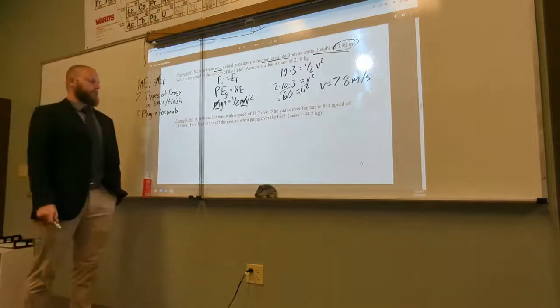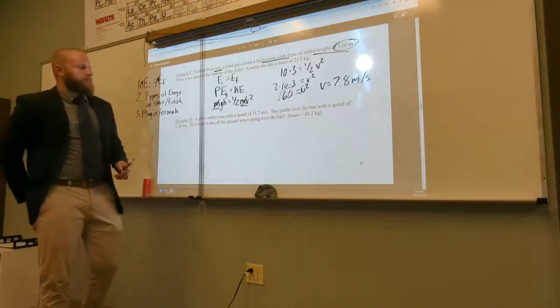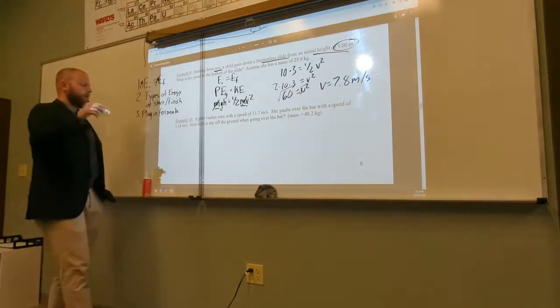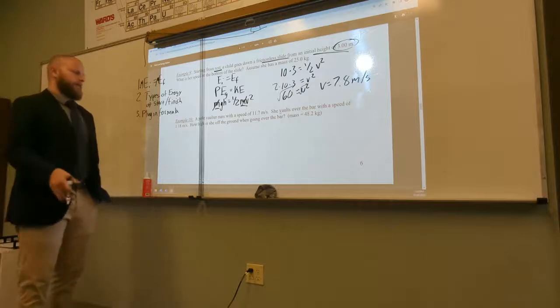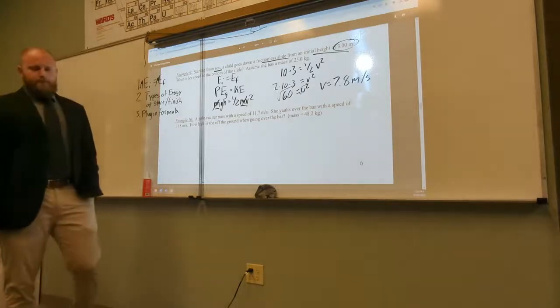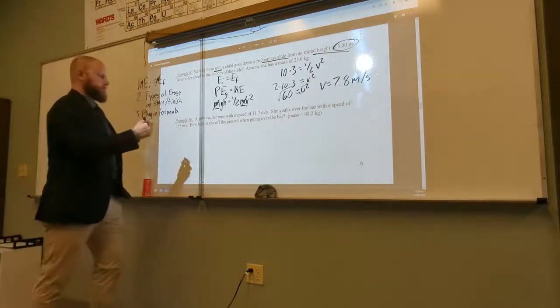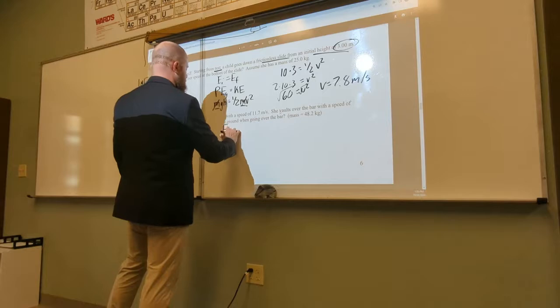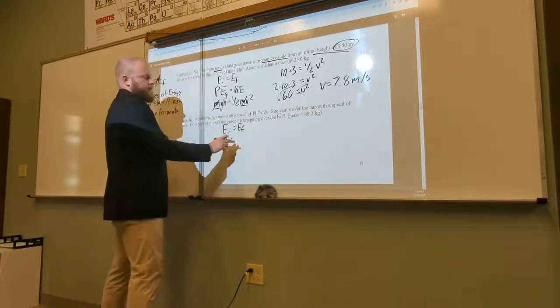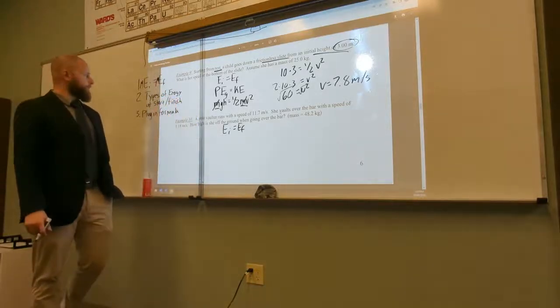Okay, let's look at the second example. A pole vaulter runs with a speed of 11.7 meters per second. She goes over the bar with a speed of 1.18 meters per second. How high is she off the ground when she's going over the bar? And they give us a mass. So, first step. EI equals EF. We want to say that we are using conservation of energy. We know that the energy at the beginning is equal to energy at the end, because energy can't change.